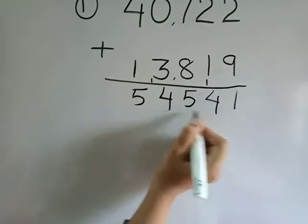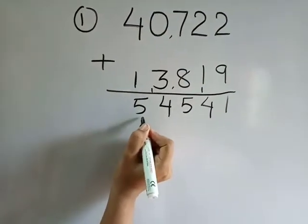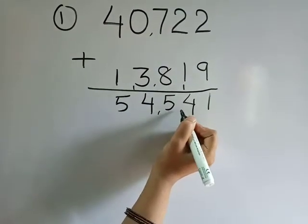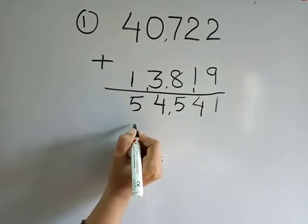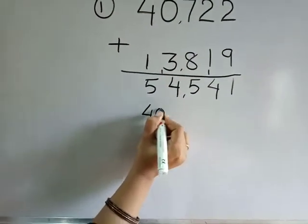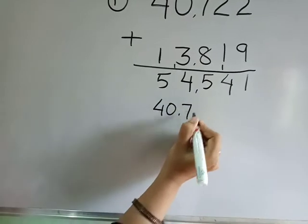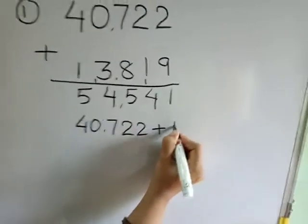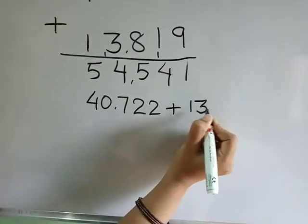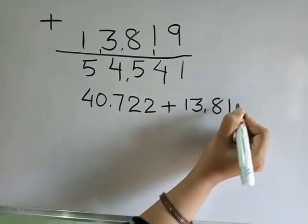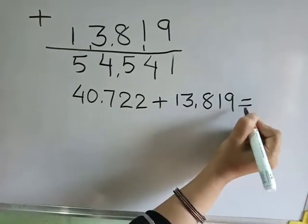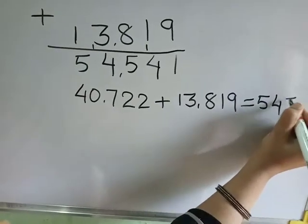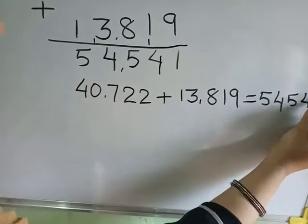Unit, tens, hundred, thousand, ten thousand. Now the answer is fifty-four thousand, five hundred and forty-one. So forty thousand, seven hundred and twenty-two plus thirteen thousand, eight hundred and nineteen is equal to fifty-four thousand, five hundred and forty-one.